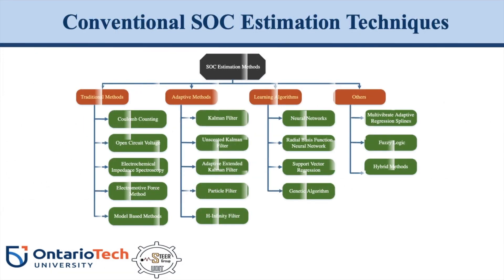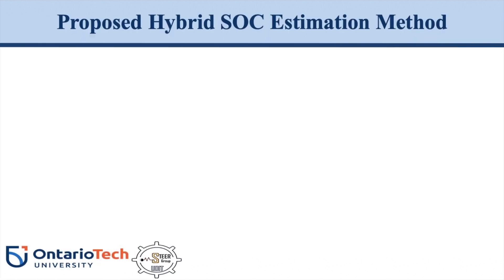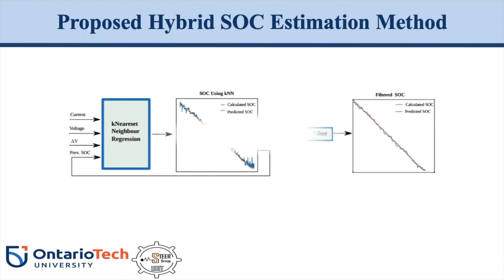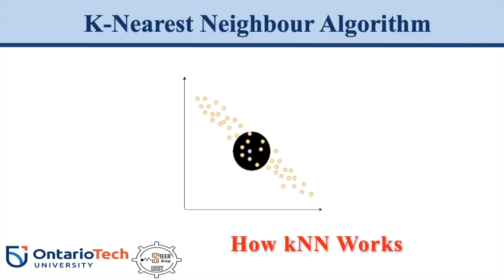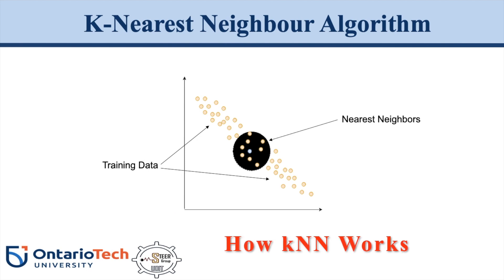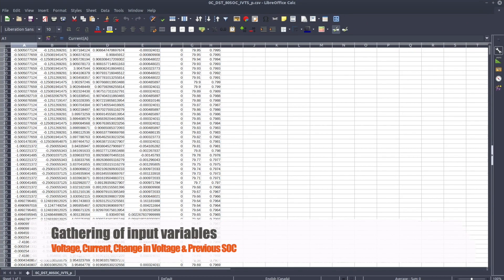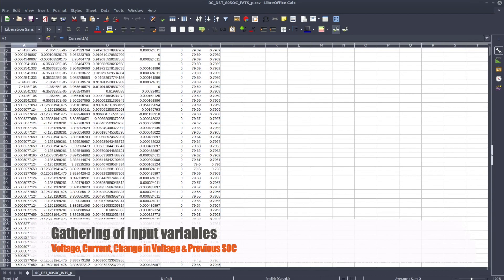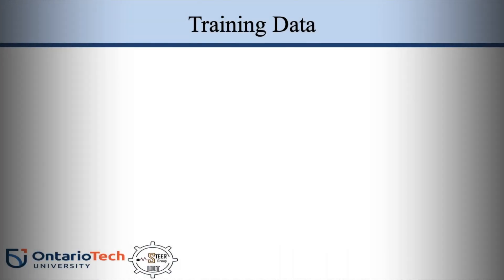Our main goal is to find the most efficient SoC estimation algorithm. The K-nearest neighbor takes input variables from test data and finds its nearest neighbors in the training data. To get the output value, a weighted average of the nearest neighbors is calculated. The first step in deploying KNN would be to get data.